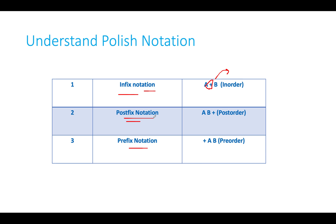In postfix notation, you are given operands first followed by the operator, similar to post-order traversal. In prefix notation, you are given the operator first followed by the two operands. There is a direct mapping between the notation and the tree traversals.